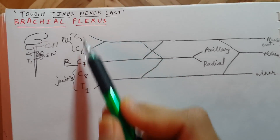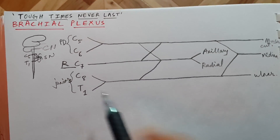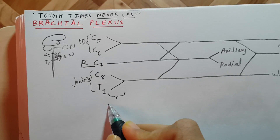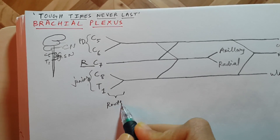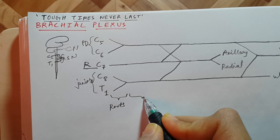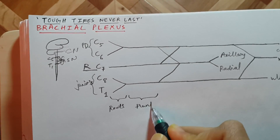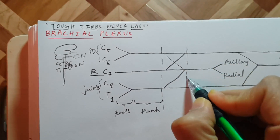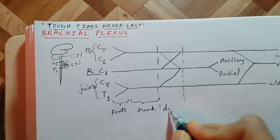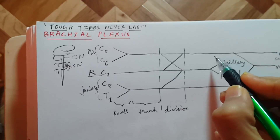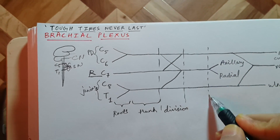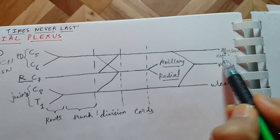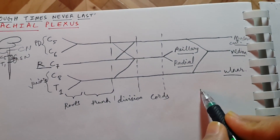Now we need to remember all the different segments of the brachial plexus. The first one is roots, then comes trunk, then comes divisions, then cords, and then the axillary nerve, radial nerve, musculocutaneous nerve, median nerve, and ulnar nerve — these are the branches.